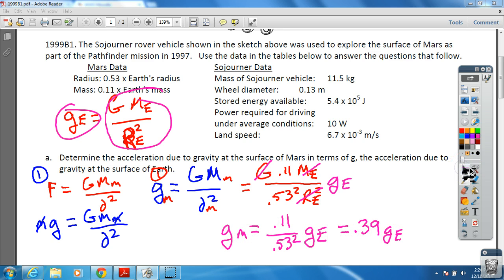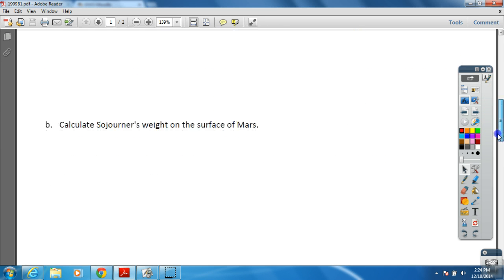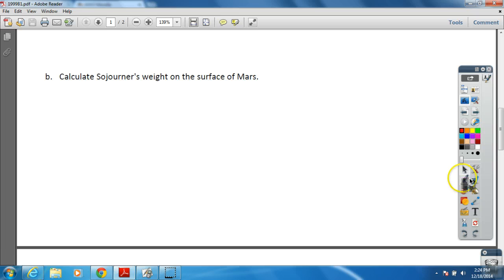The next thing we need to do is look at the next part of the problem. The next part of the problem is letter B. It says calculate Sojourner's weight on the surface of Mars. So the weight of Sojourner on the surface of Mars is equal to the mass on Mars times the gravity of Mars.